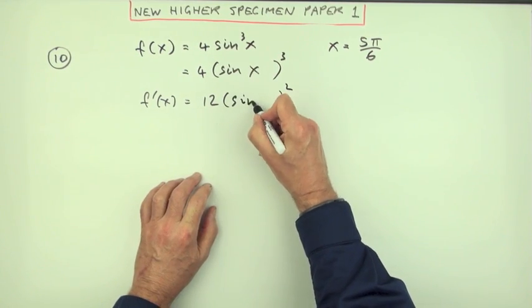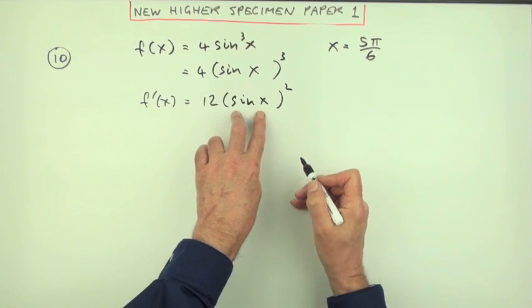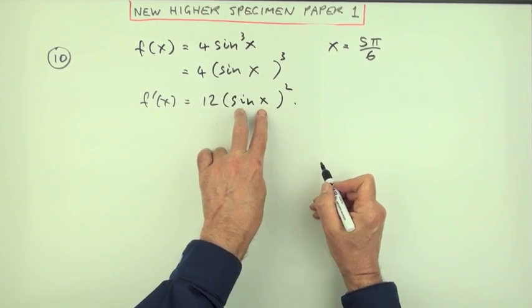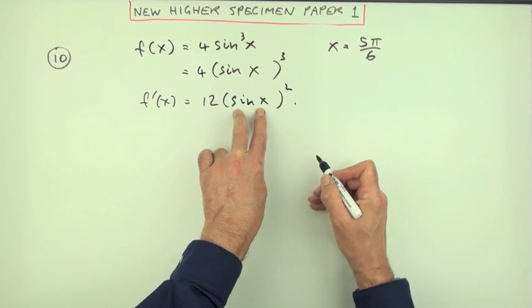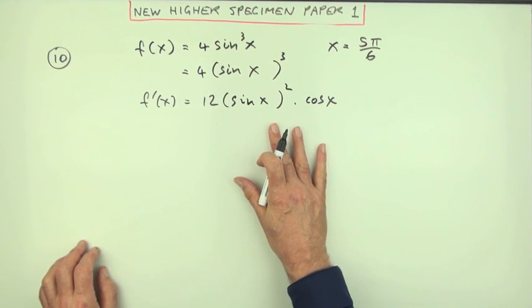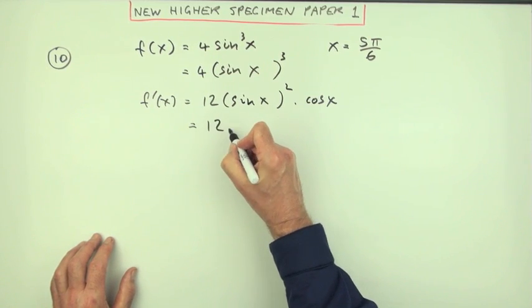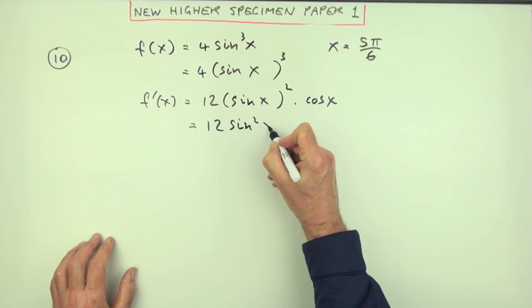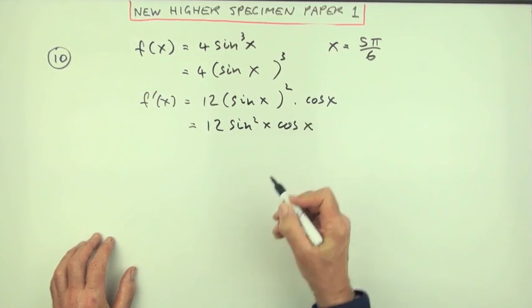Now look inside at the function that was inside. It wasn't just an x, it was a sin x, so also multiply by its derivative. Derivative of sin x is cos x. Then you can either just leave it like that because you're going to evaluate it, or I could just maybe tidy up to 12 sin²x cos x.